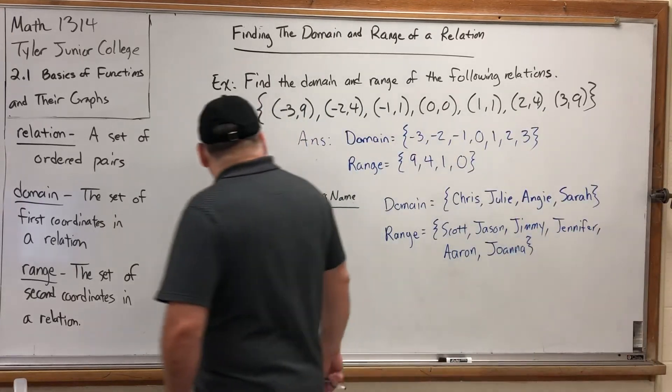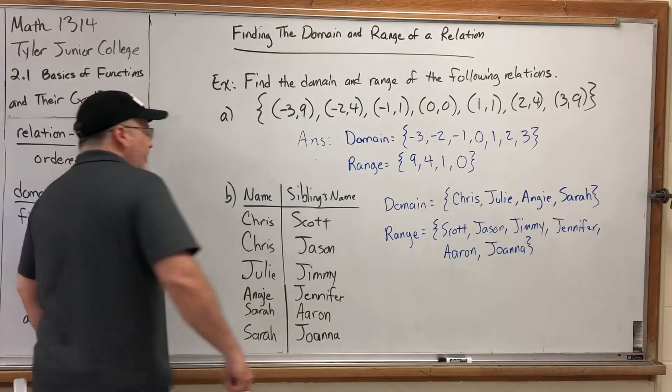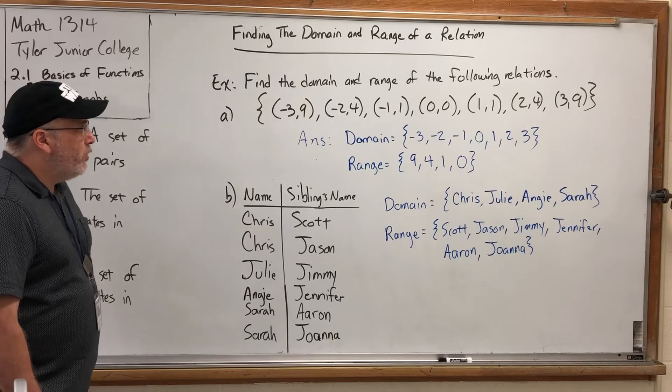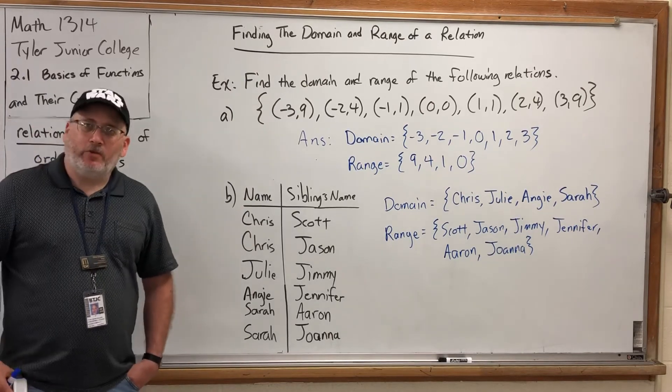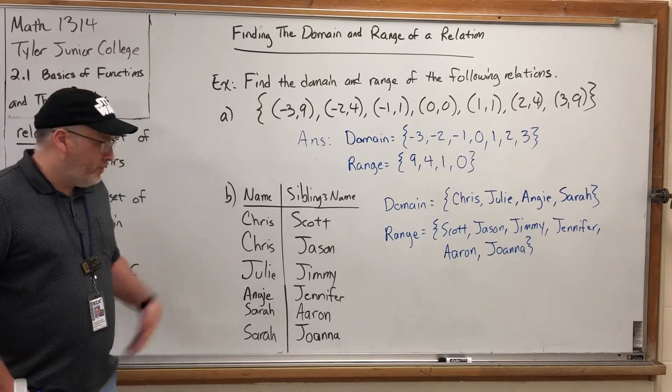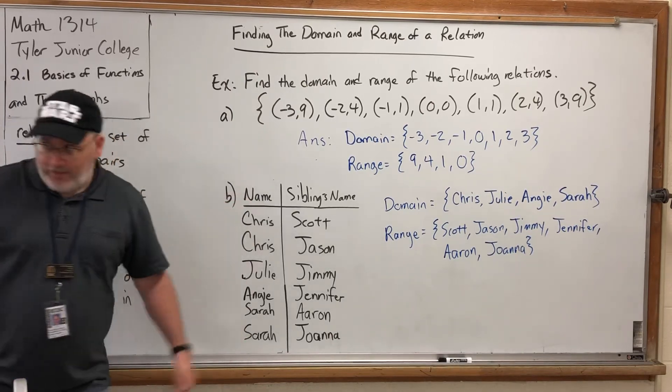So finding the domain and range is really easy when your relation is written as a set of ordered pairs or as a table.